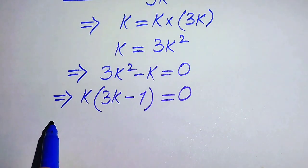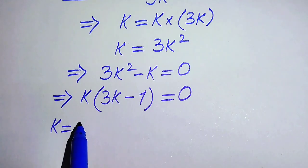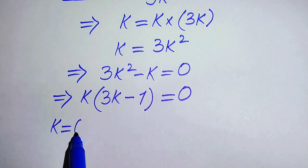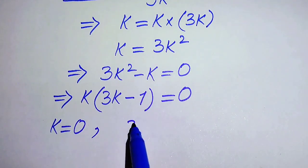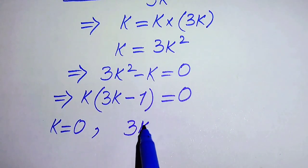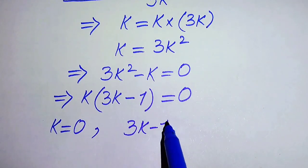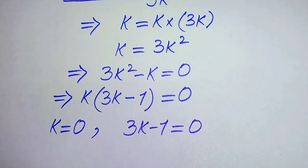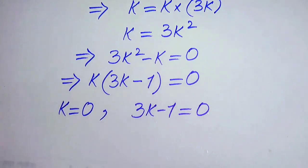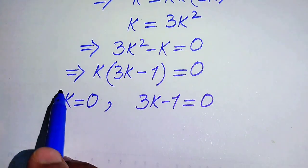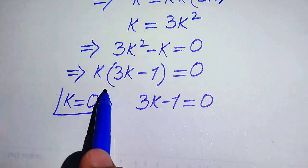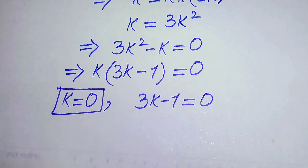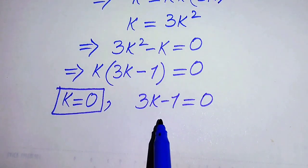We divide this into two cases. The first case gives k equals 0. The second case is 3k minus 1 equals 0, from which we need to find the value of k.